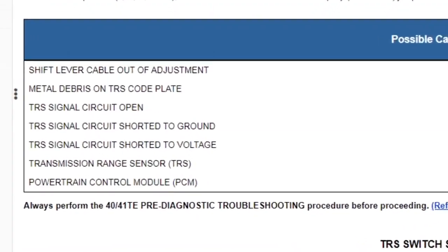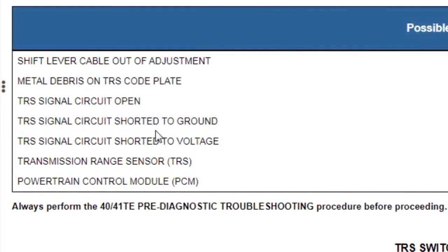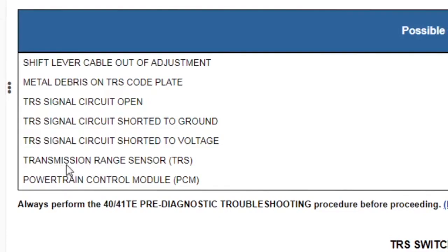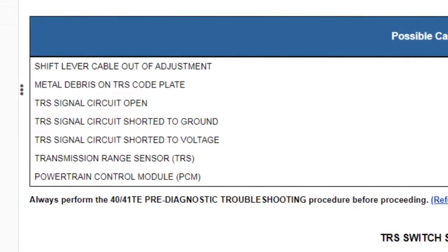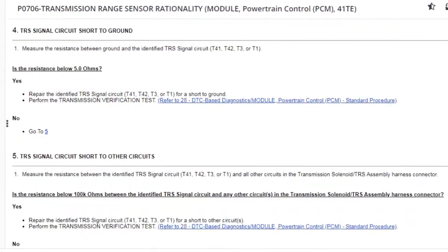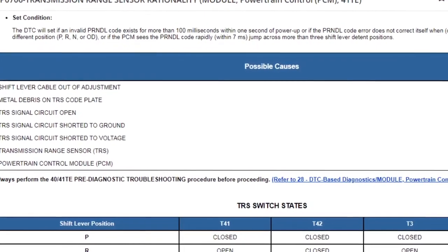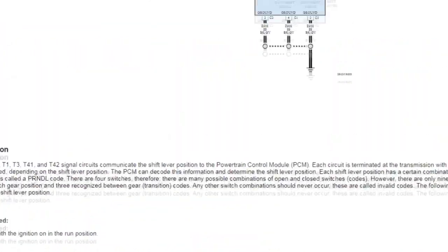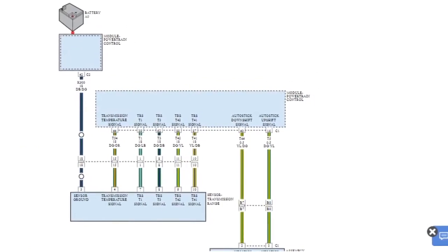Let's look at the possible causes: you could have a shift lever cable out of adjustment, metal debris in the pan, circuits open, voltage and ground issues. Right down here you can see you could simply have a failed transmission range sensor, or a failed PCM. But you really should run the test — I know a lot of guys run straight to possible causes. The test isn't that complex. I highly recommend you run the test, but I just wanted to peek at possible causes. I've seen this code and this problem a gazillion times. That doesn't take away the fact that you should perform the diagnostic.